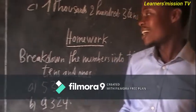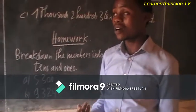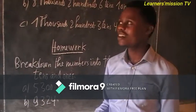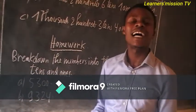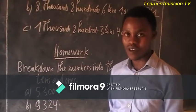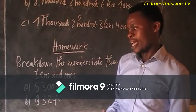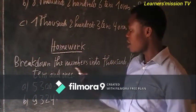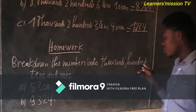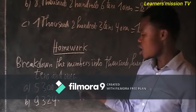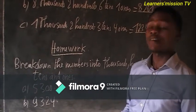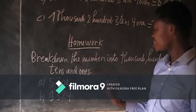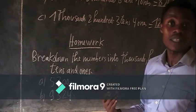So now let's say I am having the homework. Remember that today you have seen how to write in thousands, hundreds, tens, and ones. So here I am having the homework — your task is to break down the numbers into thousands, hundreds, tens, and ones. You will show me ones, you will show me tens, you will show me hundreds, you will show me thousands.